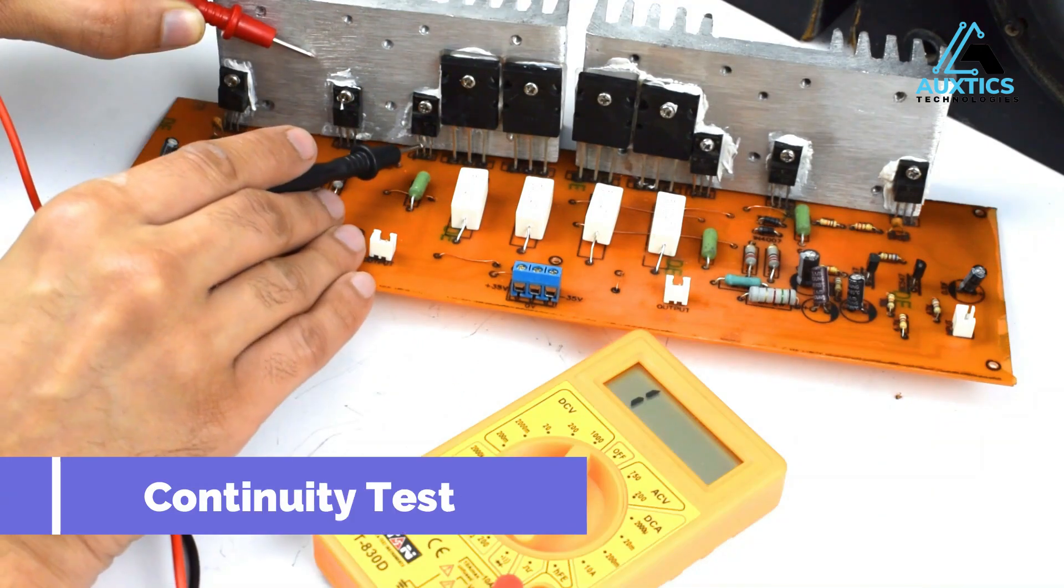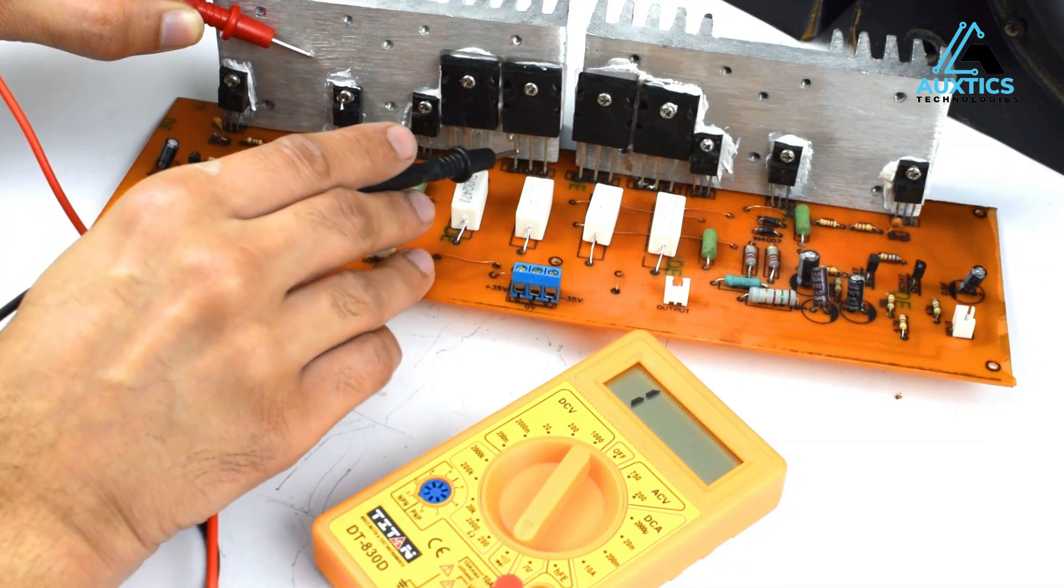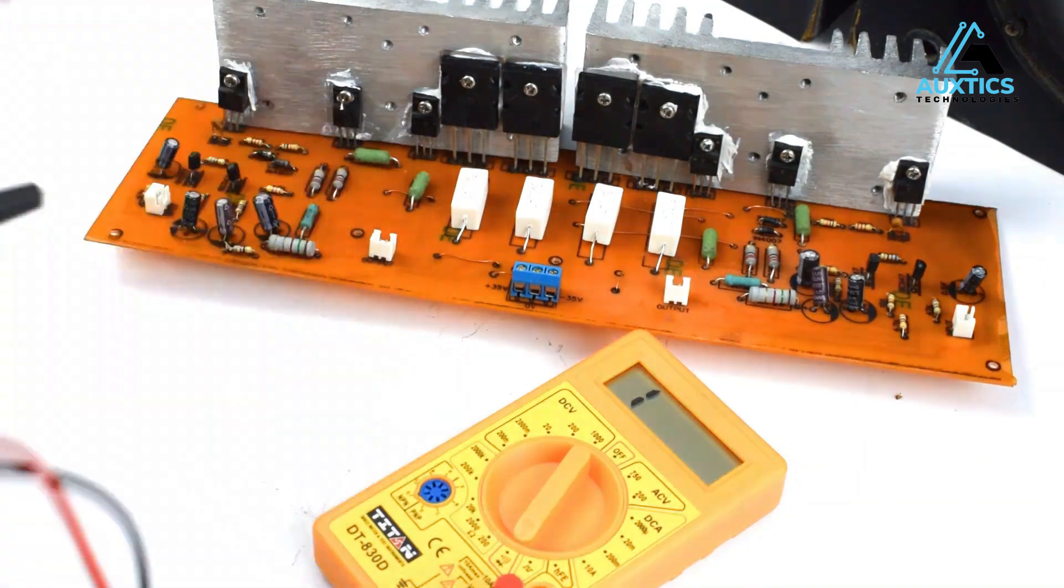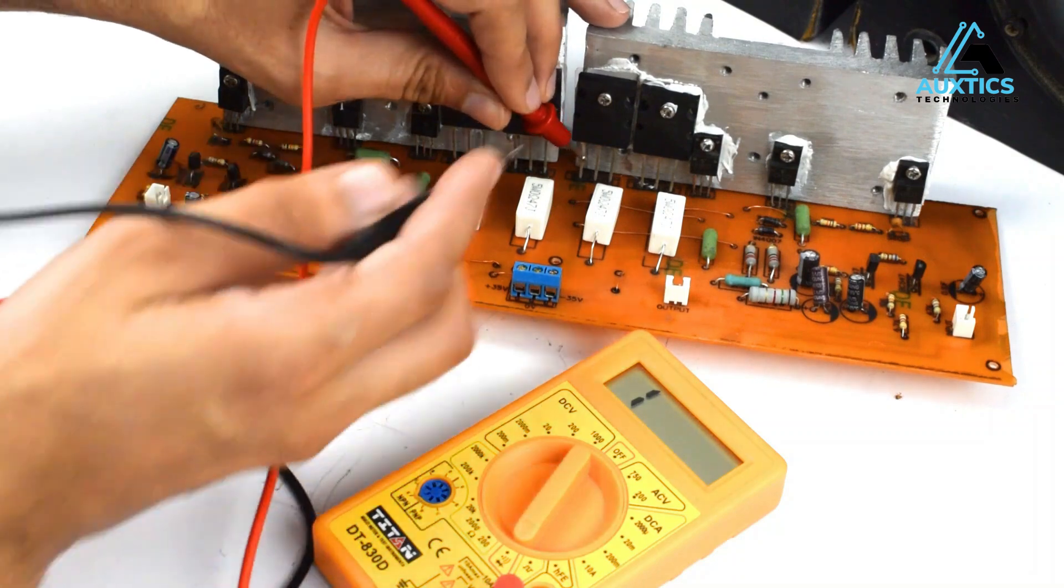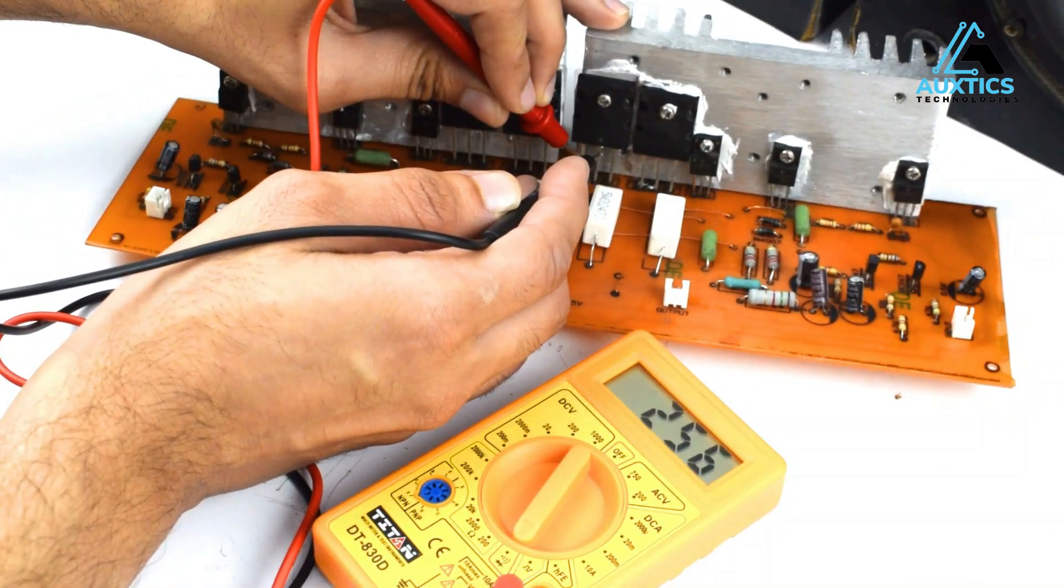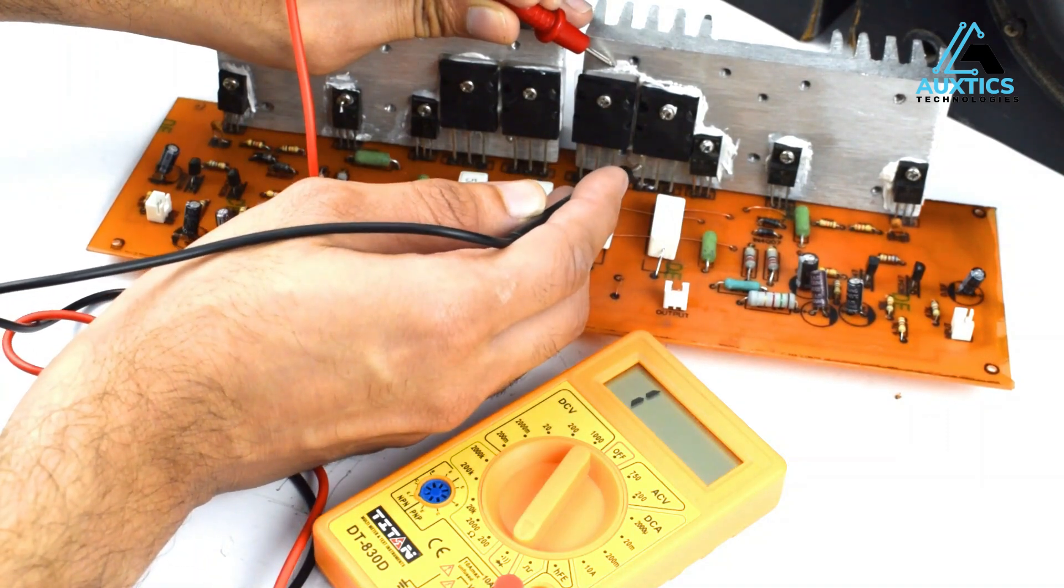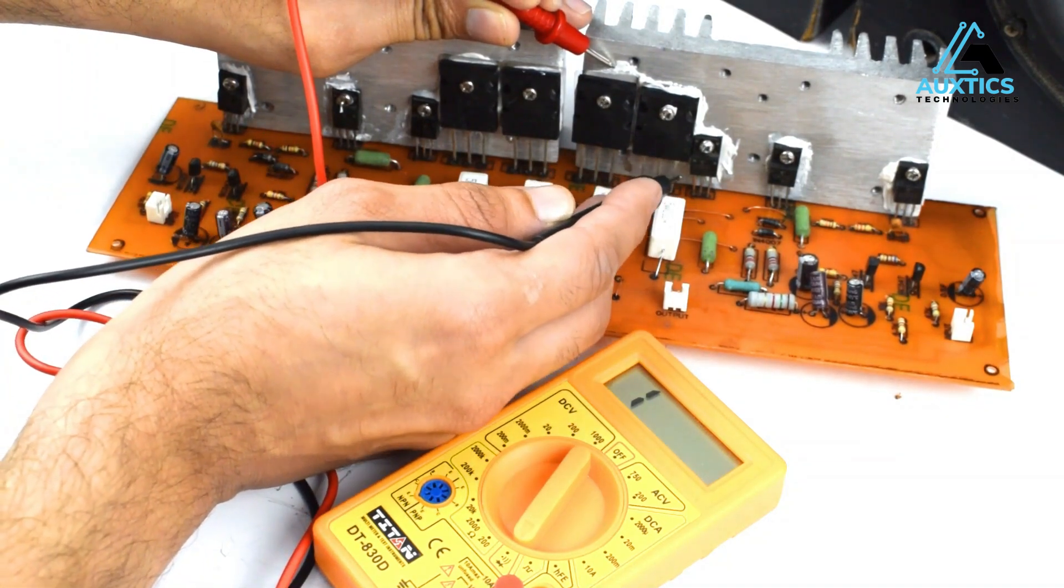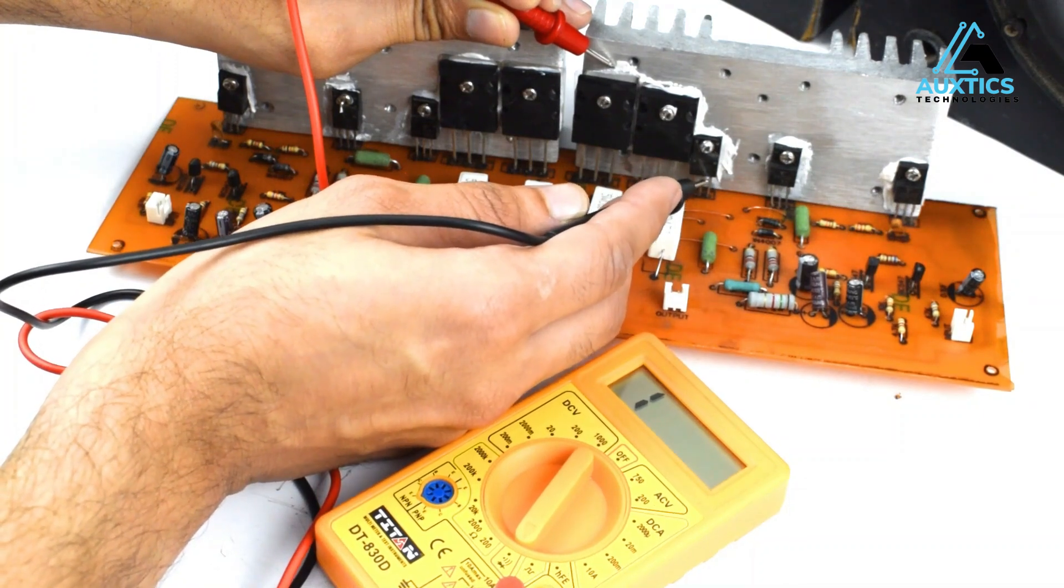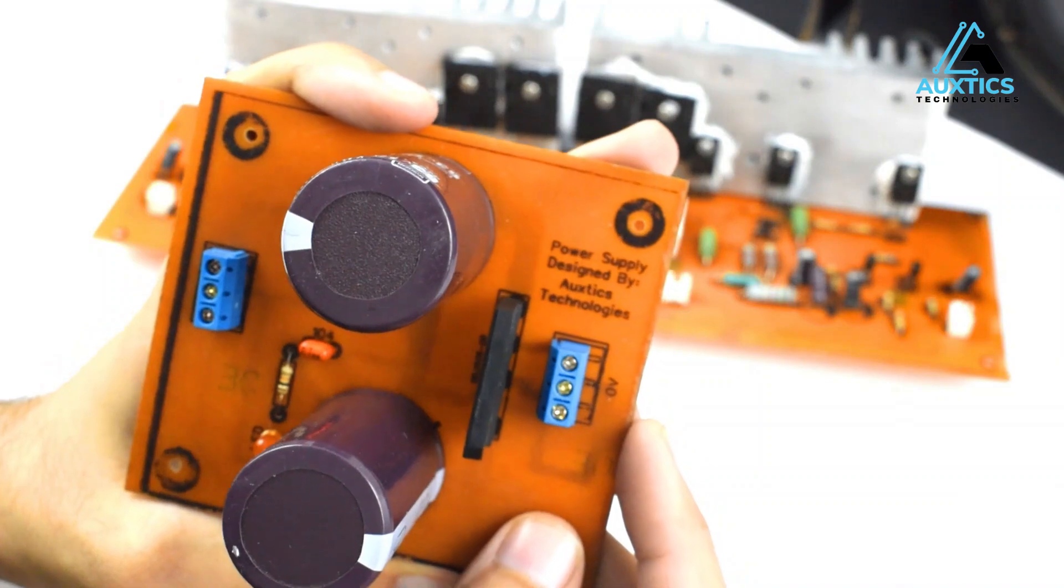Continuity test is very important, especially after assembling the circuit for the first time before turning it on. We will check it with the help of multimeter by setting the multimeter on beep or continuity. We will check it basically with the heat sink, one probe of our multimeter on the transistor legs and the other one is on the heat sink, and we have to make sure that there is no connection in between the transistors and the heat sink.